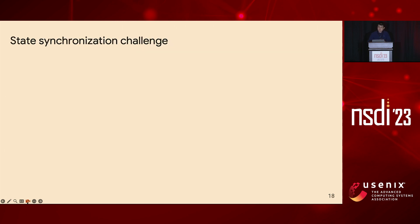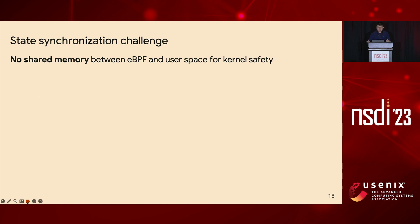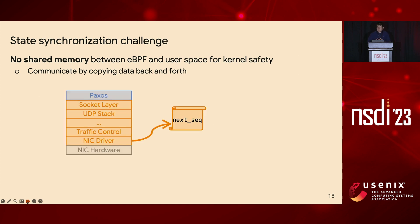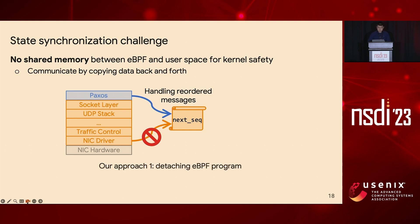I want to highlight a synchronization challenge in Electrode, which is general to any eBPF co-designed applications. There is no shared memory between eBPF and user space due to kernel safety — these two entities can only communicate by copying data back and forth. For example, the eBPF program in the kernel maintains Paxos states such as the next sequence number, and when messages get reordered, user space handles it and modifies those states. However, since there is no shared memory, we cannot use mutex or other synchronization primitives to synchronize state accesses. Electrode addresses this by disallowing the eBPF program from accessing these states using two approaches: detaching the eBPF program from the kernel, and using the eBPF map as an off-switch to decide whether the program should be triggered. Check our paper for more details.